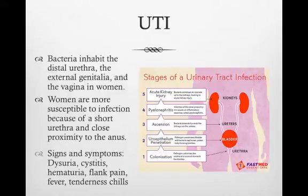With urinary tract infections, bacteria inhabits the distal urethra and external genitalia. Women are more susceptible to infection because of their short urethra and its close proximity to the anus. Because of this, E. coli is one of the most common causes of bacteriuria, or bacteria in the urine. The spread of microorganisms can travel up the urethra to the bladder causing cystitis, or up the ureters to the kidneys causing pyelonephritis.